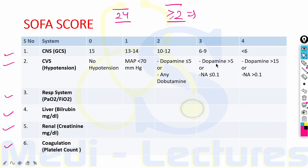If dopamine more than 15 or noradrenaline more than 0.1 micrograms per kg per minute is used, score is 4. For respiratory system, PaO2/FiO2 ratio is used: more than 400 is 0, 300 to 400 is 1, 200 to 300 is 2, 100 to 200 is 3, and less than 100 is 4.